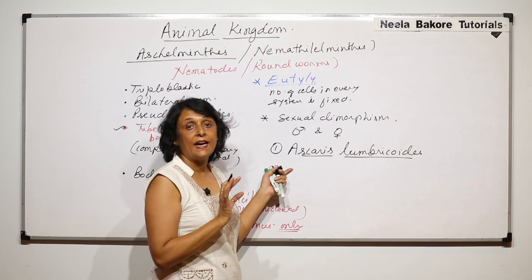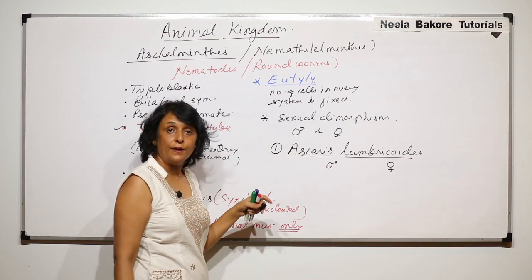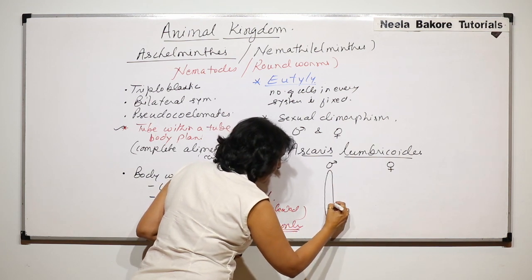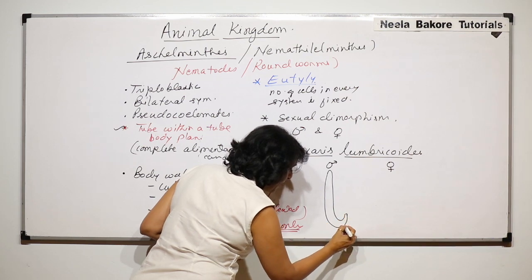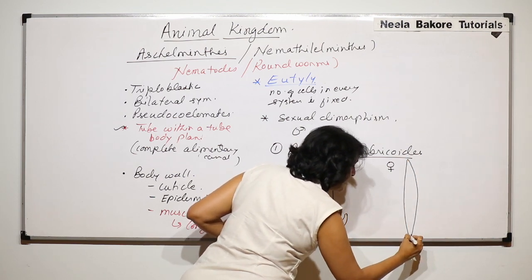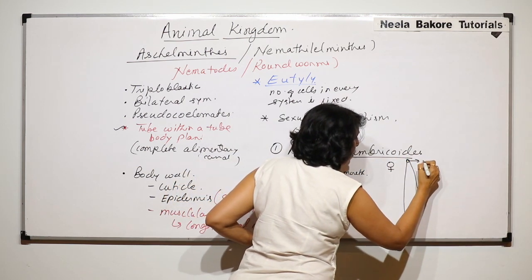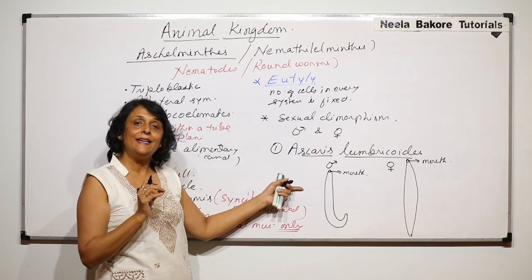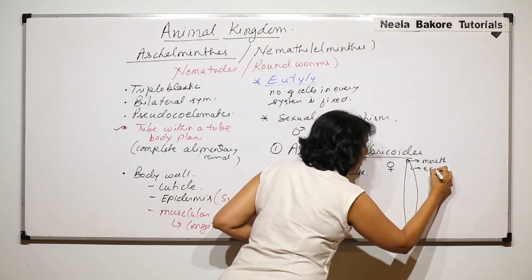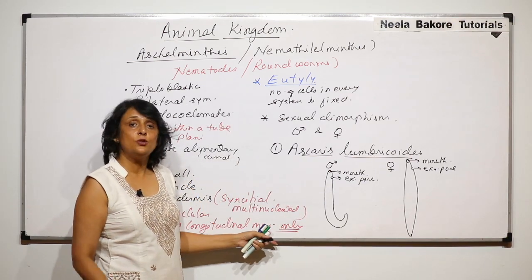In Ascaris, males and females can be easily distinguished. The male is smaller compared to the female and has a cylindrical body with a bent posterior end. The female is longer and has a straight body. The mouth is at the anterior end in both males and females, followed by a small excretory pore, which is also the same in both sexes.